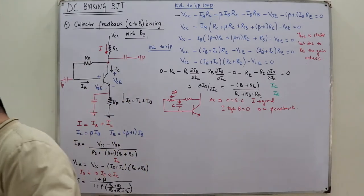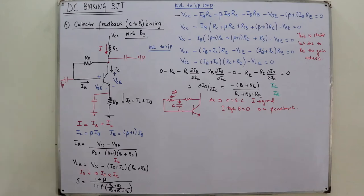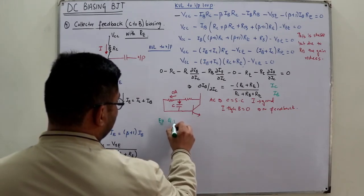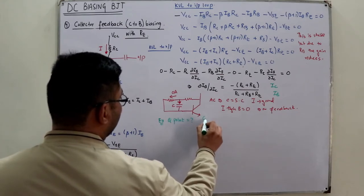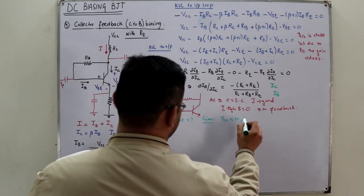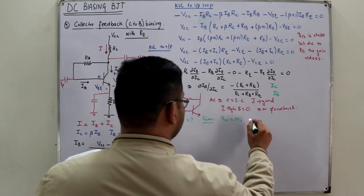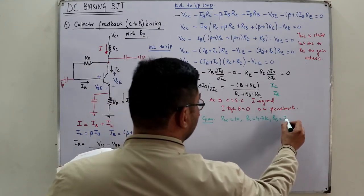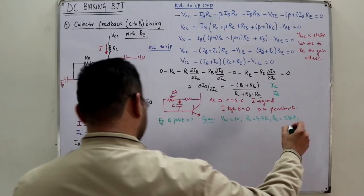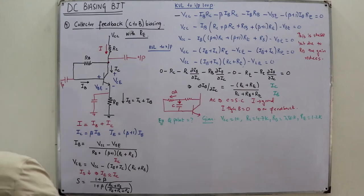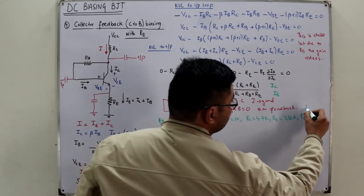Let's do example 4.12 from the book: determine the quiescent levels (Q point). Given: VCC = 10 V, RC = 4.7 kΩ, RB = 250 kΩ, RE = 1.2 kΩ, and β = 90.